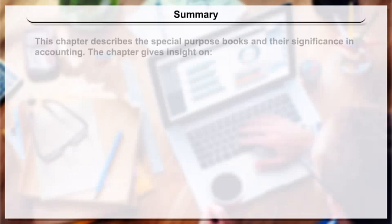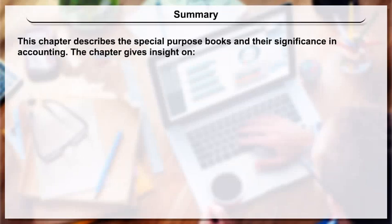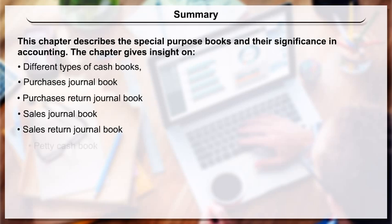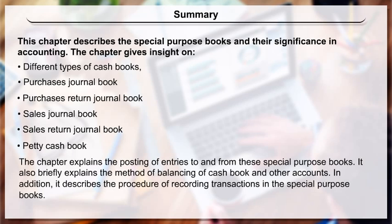Summary: This chapter describes special purpose books and their significance in accounting. It covers different types of cash books, purchases journal book, purchases return journal book, sales journal book, sales return journal book, and petty cash book. The chapter also explains the posting of entries to and from these special purpose books, the method of balancing the cash book and other accounts, and the procedure of recording transactions in the special purpose books.